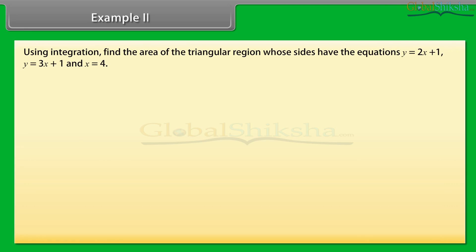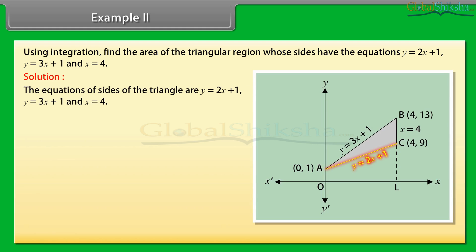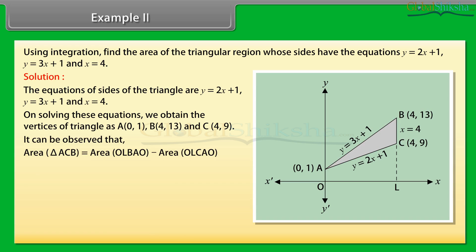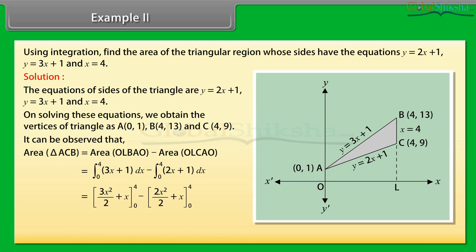Example 2: Using integration, find the area of the triangular region whose sides have equations y = 2x + 1, y = 3x + 1, and x = 4. Solution: On solving these equations, we obtain the vertices of the triangle: A(0, 1), B(4, 13), and C(4, 9). Area of triangle ACB = area of OLBAO − area of OLCAO = ∫from 0 to 4 of (3x + 1) dx − ∫from 0 to 4 of (2x + 1) dx. By solving, area of triangle ACB = 8 square units.